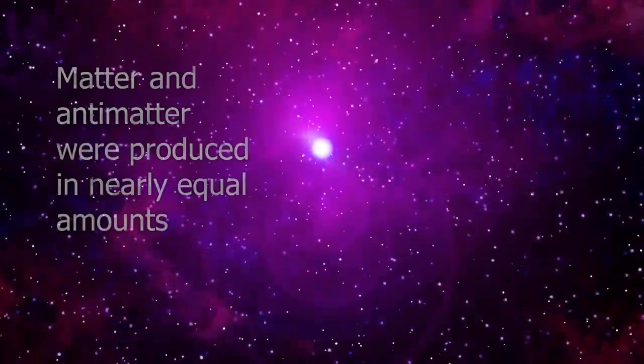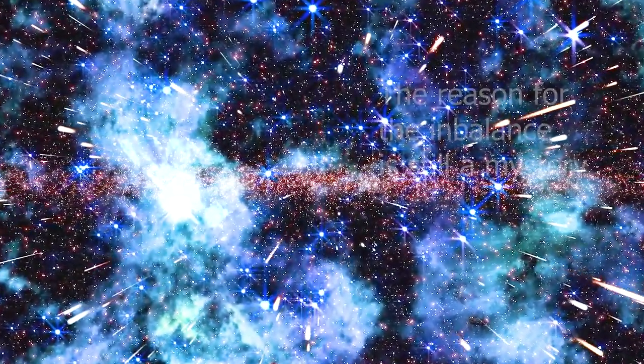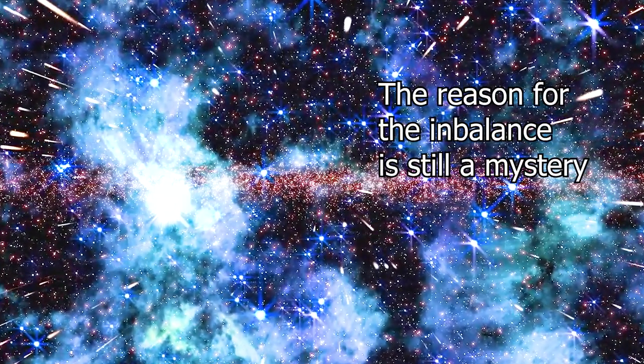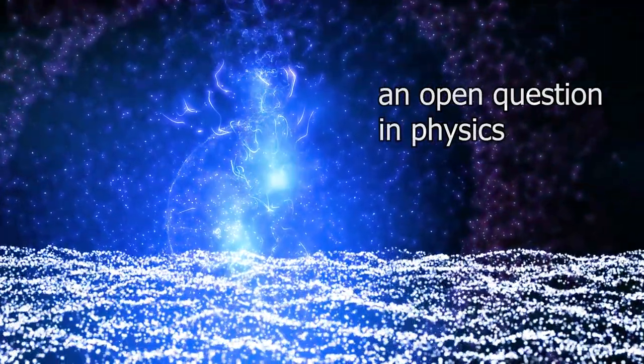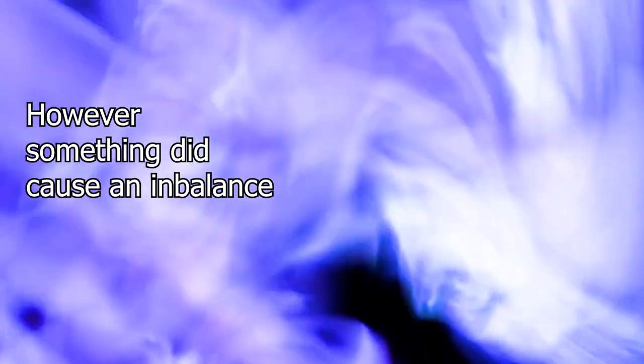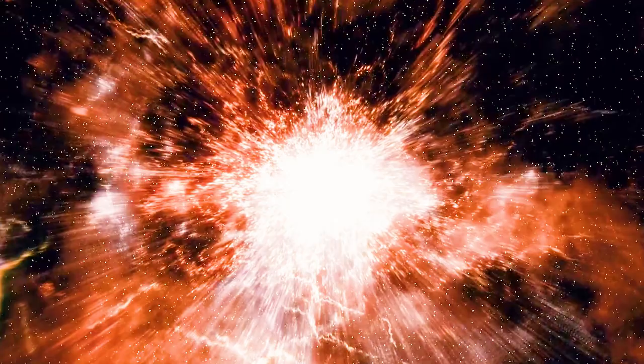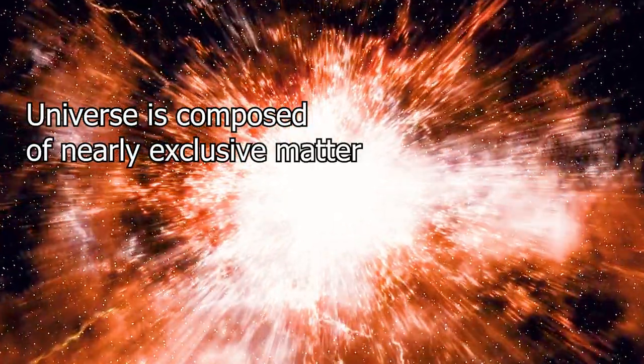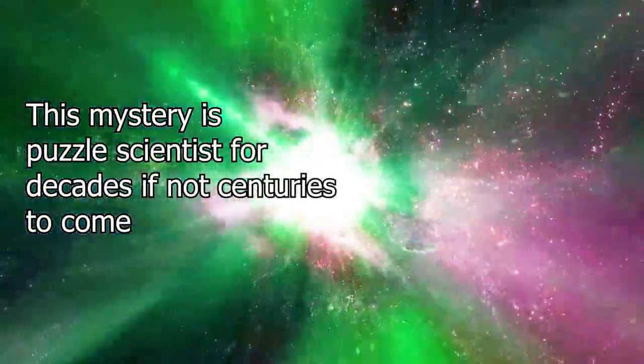In the early universe, it's believed that matter and antimatter were produced in nearly equal amounts, keyword here being nearly equal. More matter was produced. The exact reason for this imbalance between matter and antimatter is still not fully understood and is one of the open questions in physics. One possibility is that there is a tiny difference in the behavior of matter and antimatter particles that led to an unequal distribution of both being created in the early universe. However, something did cause a slight imbalance, leading to an excess of matter over antimatter at the Big Bang during the creation of the universe. This excess of matter is thought to be the reason why the universe today is composed almost entirely of matter, but only tiny amounts of antimatter. This matter and antimatter imbalance at the Big Bang is another mystery that will likely puzzle scientists for decades, if not centuries to come.